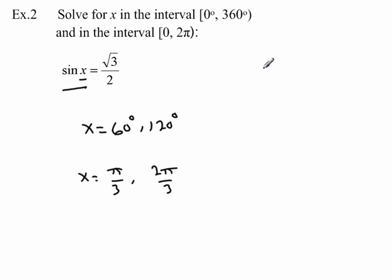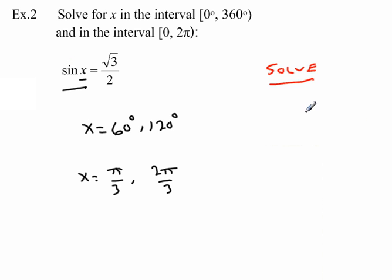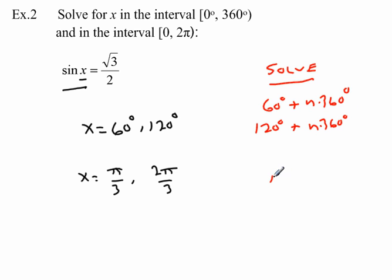If the directions just say 'solve' without specifying an interval, that means find every possible solution. Since going all the way around the circle another 360 degrees also gives a solution, there's an infinite number. We show that by writing 60 degrees plus n times 360 degrees, where n is any integer. The other solution would be 120 degrees plus n times 360 degrees. In radians: π/3 plus n times 2π, and likewise 2π/3 plus n times 2π.